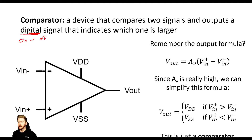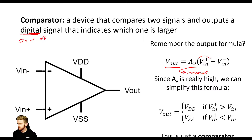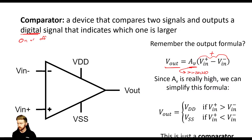First we need to review that output formula — the transfer function. It tells us that the output voltage V_out is equal to AV times the differential input. Remember, this AV is really, really large — much greater than 20,000. So if V_in_plus is just a little bit greater than V_in_minus, this is going to be positive, and a really large number times a positive number gives us a large positive output. If it's the opposite — negative — then it's going to give us a really large negative. Since our signals will saturate the output very easily, we can simplify this formula.